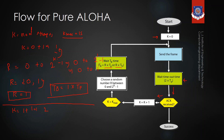With k equal to 2, which is still less than k_max, the value of r is selected between 0 and 2^(k−1), which becomes 0 to 2^(2−1), meaning 0 to 3. So r can be 0, 1, 2, or 3. The sender randomly selects one — suppose r equals 3 — and waits for 3 × propagation delay time. This waiting time is called the backoff time (tb). After waiting, it sends the frame again.